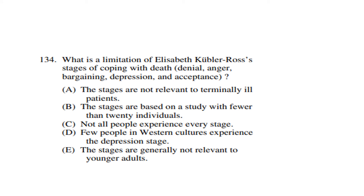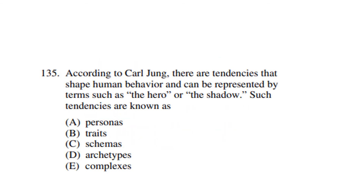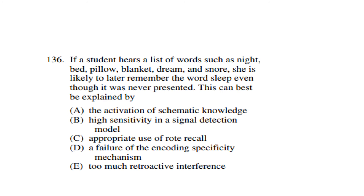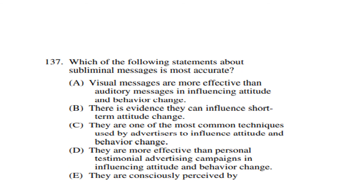Question 134: What is the limitation of Elizabeth Kübler-Ross's stages of coping with death — denial, anger, bargaining, depression, and acceptance? The answer is: not all people experience every stage. Question 135: According to Carl Jung, tendencies that shape human behavior and can be represented by terms such as 'the hero' and 'the shadow' are known as archetypes. Question 136: If a student hears a list of words such as night, bed, pillow, blanket, dream, and snow, she is likely to later remember the word 'sleep' even though it was never presented. This can best be explained by the activation of schematic knowledge.